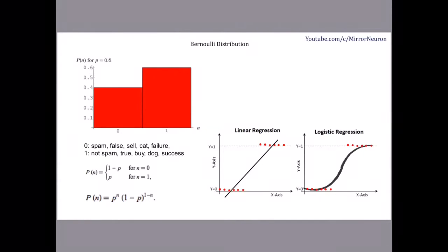According to the Bernoulli distribution, the probability of something happening and the probability of it not happening are independent of each other. So we can write the joint probability as p to the power n, multiplied by 1 minus p to the power 1 minus n, where n is the value we are getting — either 0 or 1 — and p gives the probability of getting a 1. The probability of getting a 0 is therefore 1 minus p.